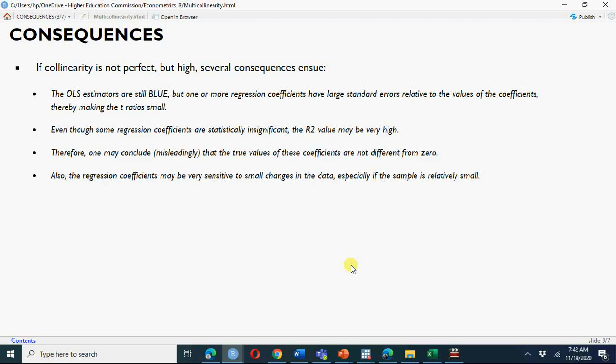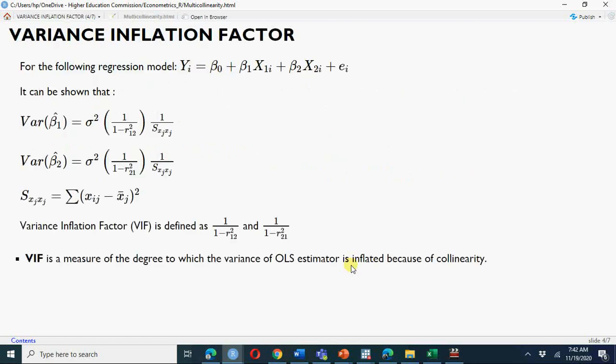There is a term called variance inflation factor. So variance of beta 1 hat is sigma square times this: 1 over 1 minus R square. This is called variance inflation factor.